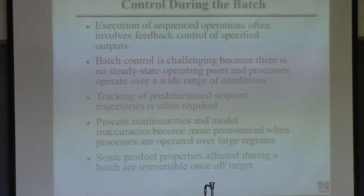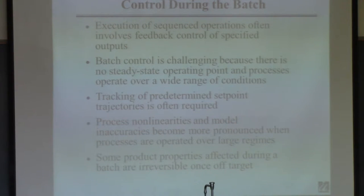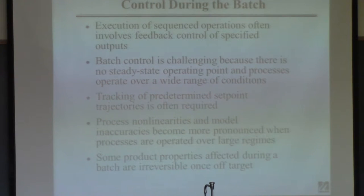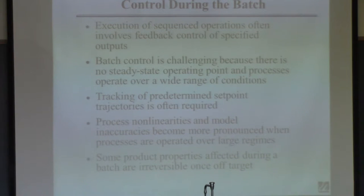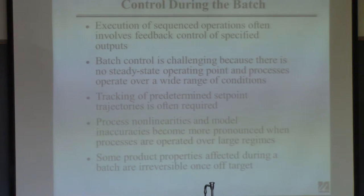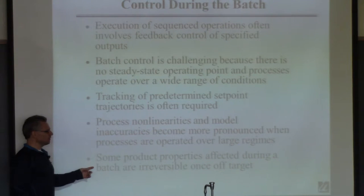The other problem is that if you operate a continuous process and don't like the overhead composition, you change the reflux and eventually get what you want — because you have an infinite amount of time. But if you're running a batch process, you might just run out of time. You can't get the product property back on target before the batch is done. And it's common that things you do in batch processes are irreversible.